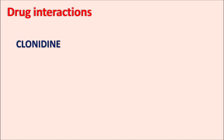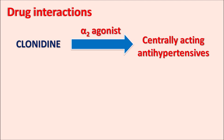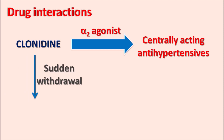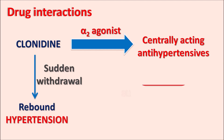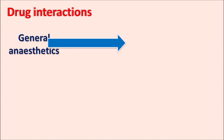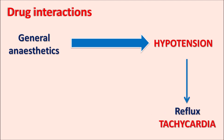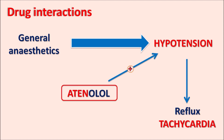Another important drug interaction involves clonidine. Clonidine is an alpha-2 agonist that inhibits the release of norepinephrine and is a centrally acting antihypertensive. When clonidine is suddenly withdrawn, it can produce rebound hypertension. So if clonidine is replaced with atenolol, atenolol can further increase the rebound hypertension; some gap should be maintained between stopping clonidine and initiating atenolol. Similarly, general anesthetics such as halothane produce cardiac depressant activity and hypotension. This hypotension may result in reflex tachycardia, and atenolol can increase the hypotension produced by general anesthetics, so care should be taken when combining them.